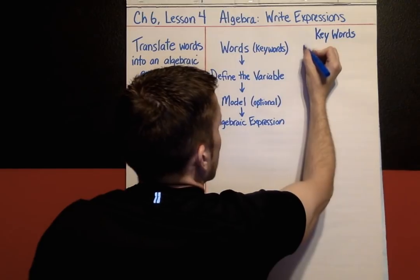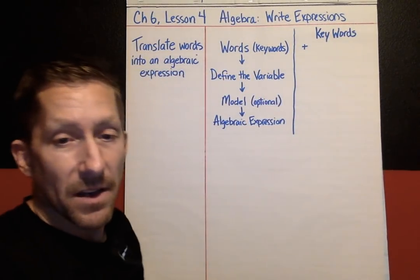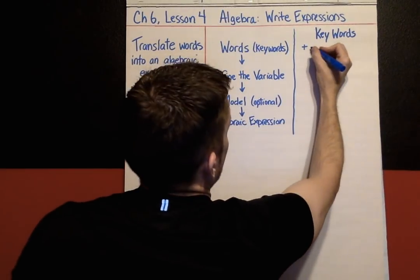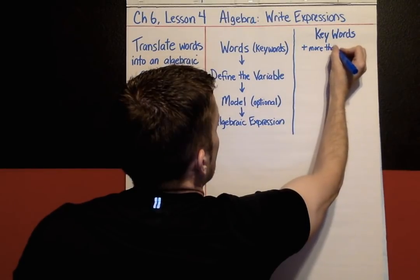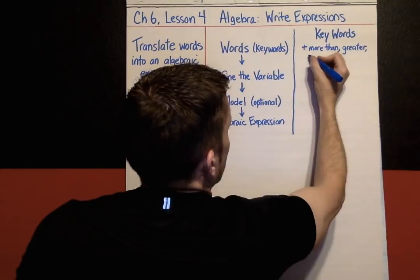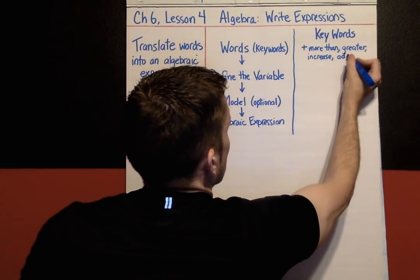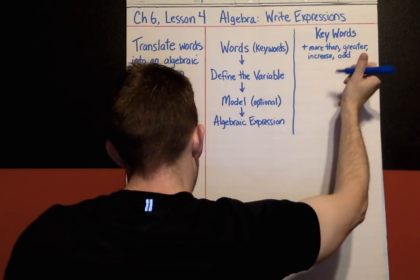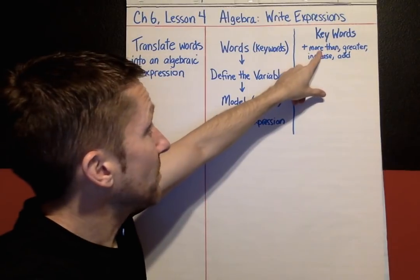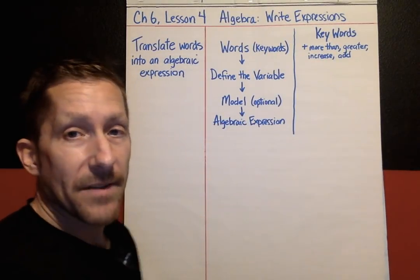There are more keywords than what I'm going to write here, but this is a good start. Over here I'm going to write 'keywords.' These words mean you're going to be adding: 'more than,' 'greater than,' 'increase,' 'add.' Again, there are more, but if you see these — for example, 'five more than' something means adding five; 'six greater than' something means adding six; 'an increase of 4.5' means adding 4.5.